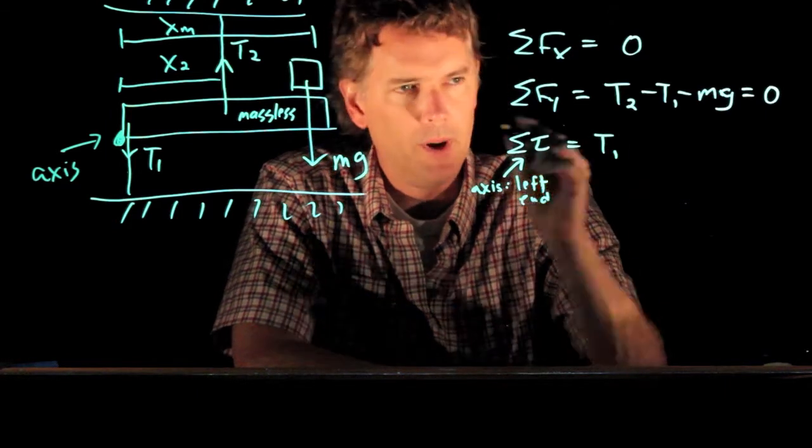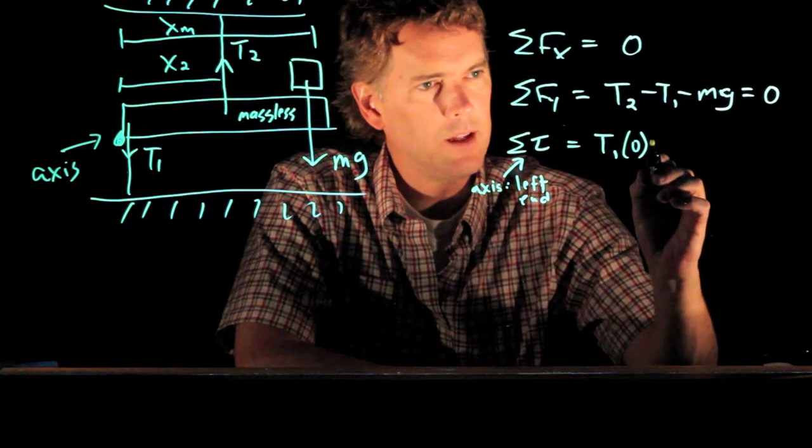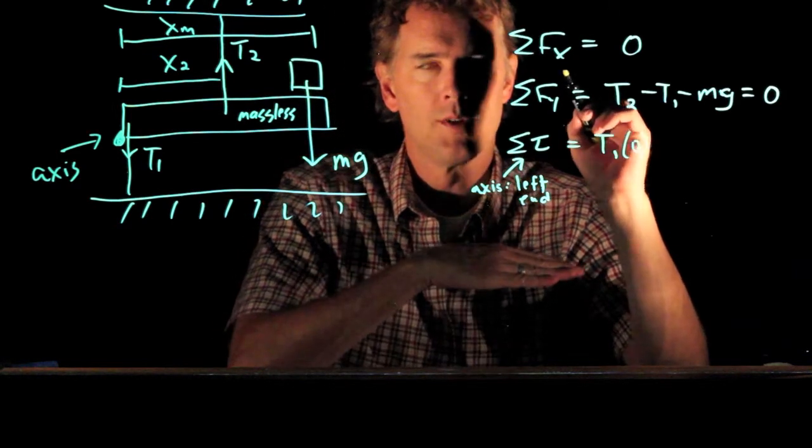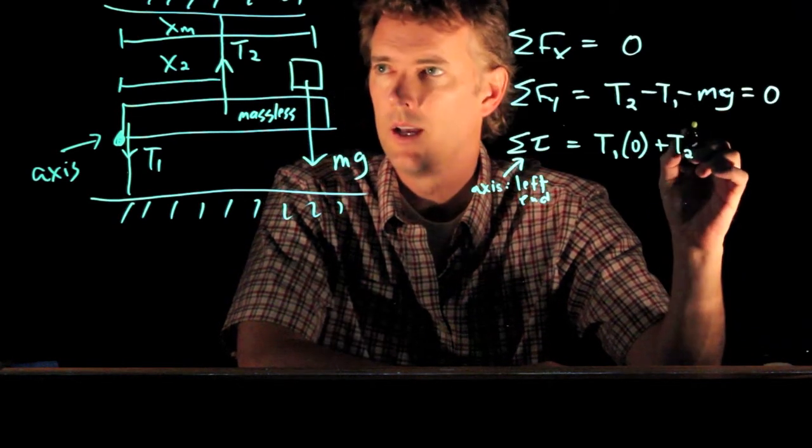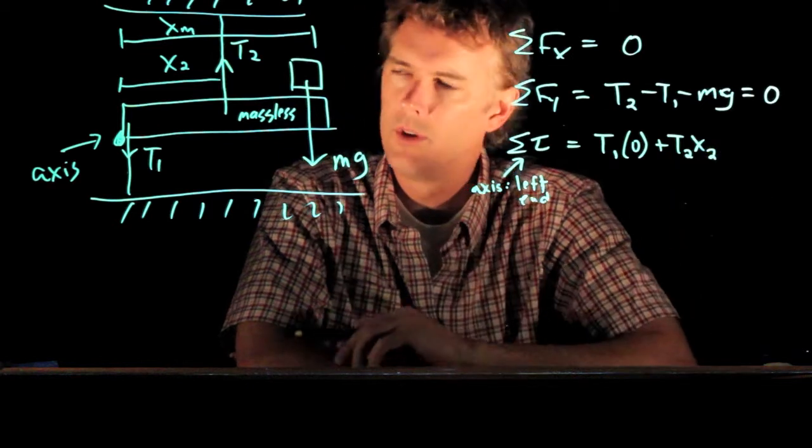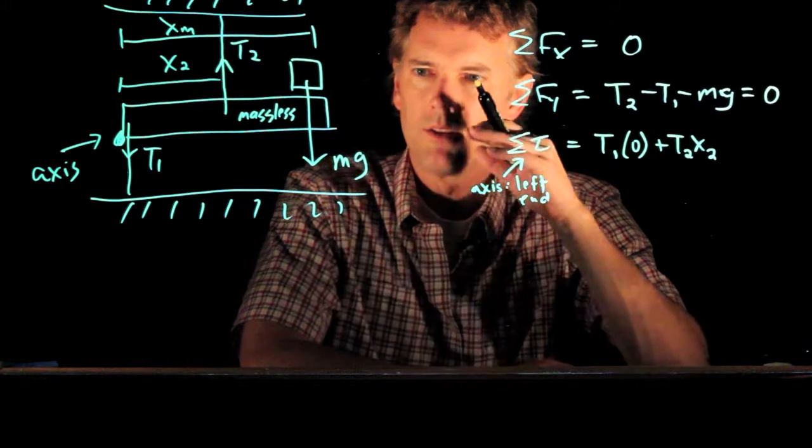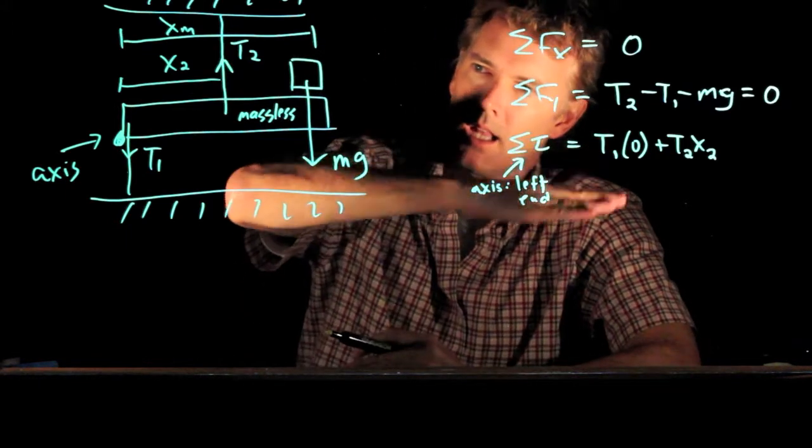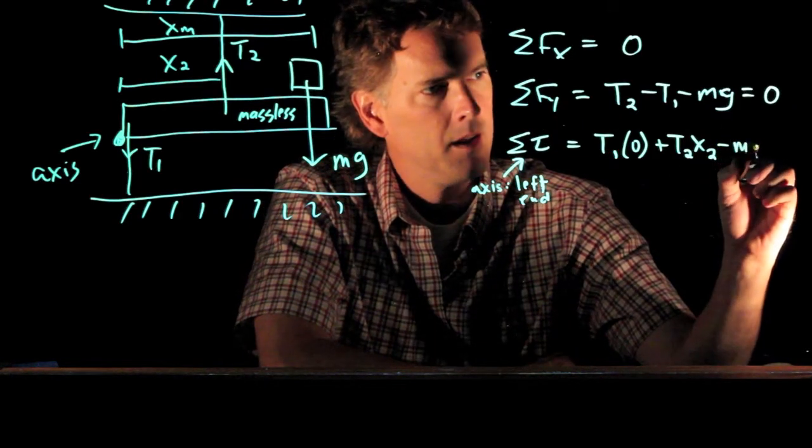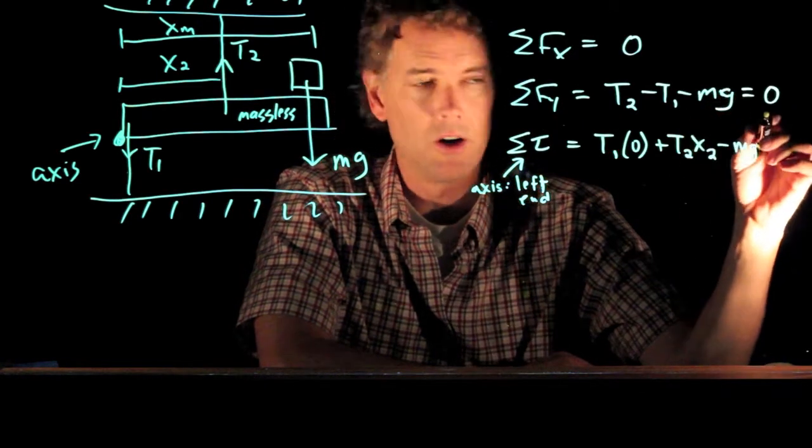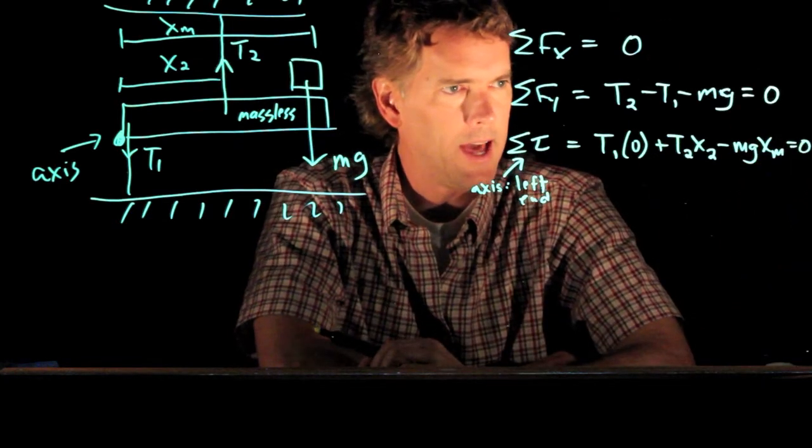T1 is a force, but the lever arm for that is zero. T2 is going to rotate it counterclockwise. We give it a positive value. And its lever arm is x2. And mg is acting to rotate it in a clockwise direction. And therefore, we give it a minus sign. And its lever arm is what we call x sub m. And all of that has to add up to zero.